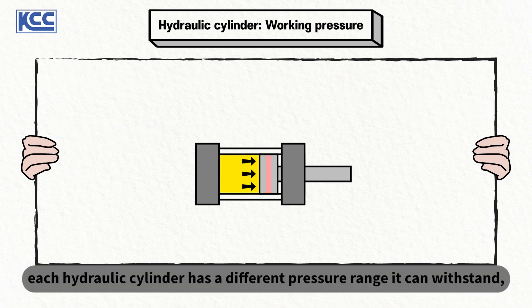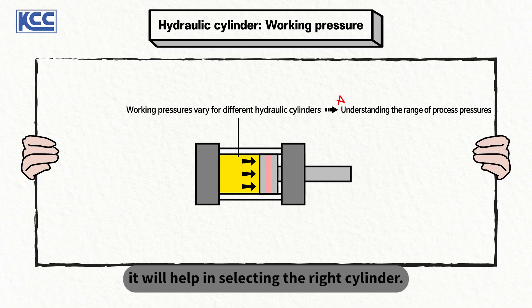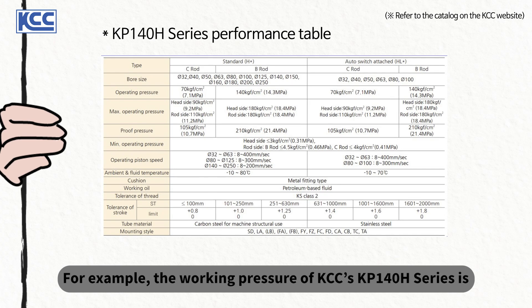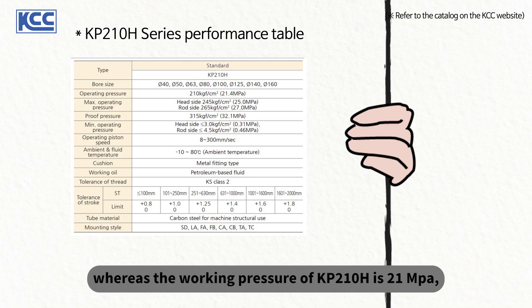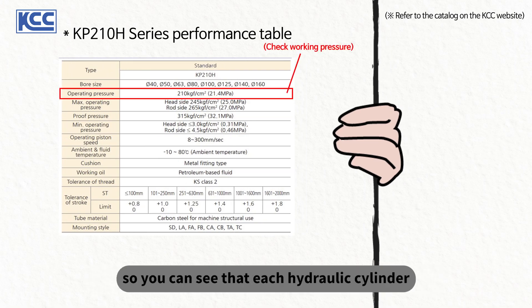Moreover, each hydraulic cylinder has a different pressure range it can withstand, so if you know the range of pressures you use, it will help in selecting the right cylinder. For example, the working pressure of KCC's KP140H series is about 7 MPa and 14 MPa as shown in the performance table, whereas the working pressure of KP210H is 21 MPa, so you can see that each hydraulic cylinder has a different working pressure.